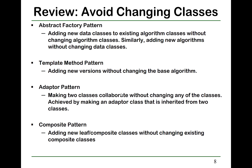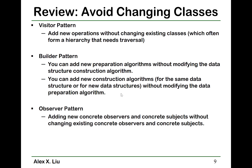For the composite pattern, you can add new leaf or composite classes without changing existing composite classes. For the visitor pattern, you can add new operations without changing existing classes — those existing classes often form a hierarchy that may need traversal.